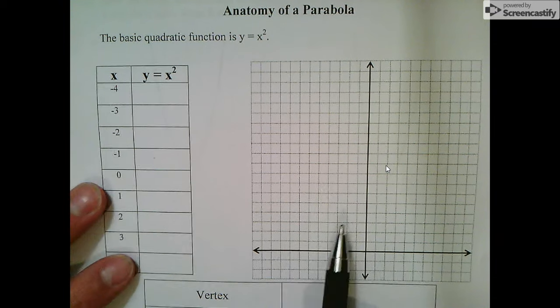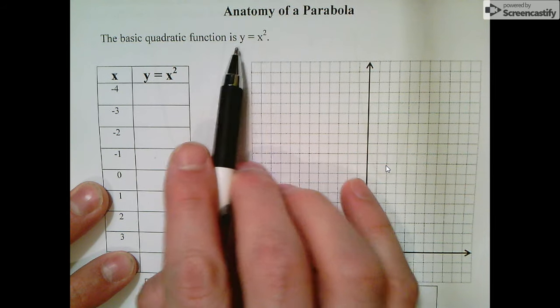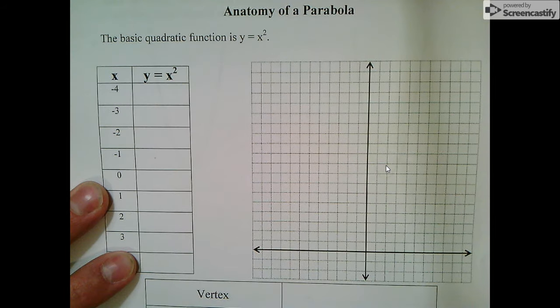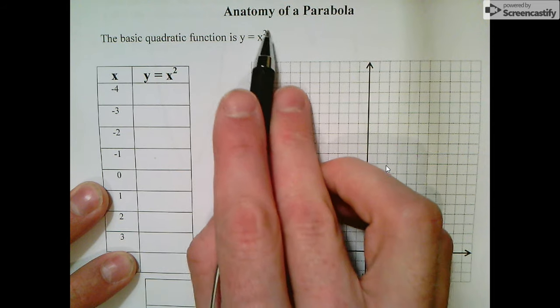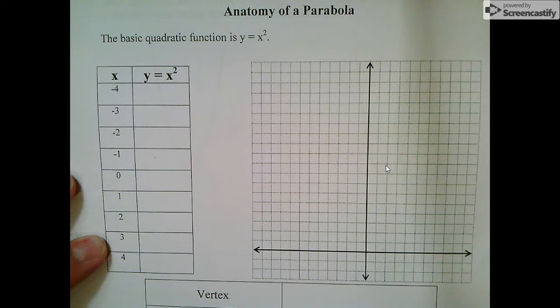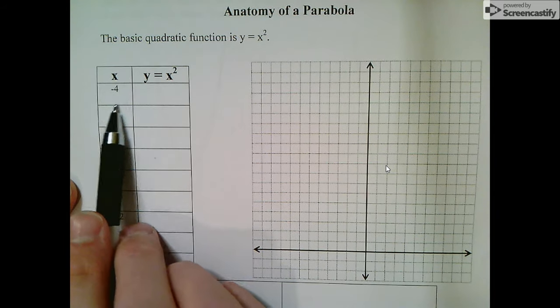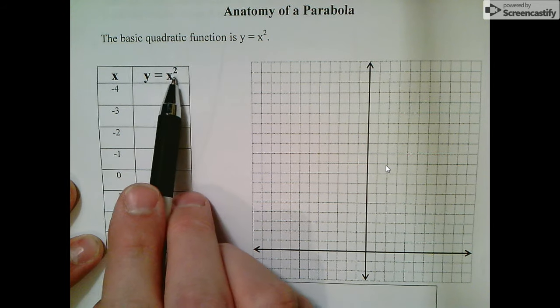A parabola is the graph shape that comes from anything involving x squared, where x squared is the highest exponent. To get started, we put negative 4 into x squared.